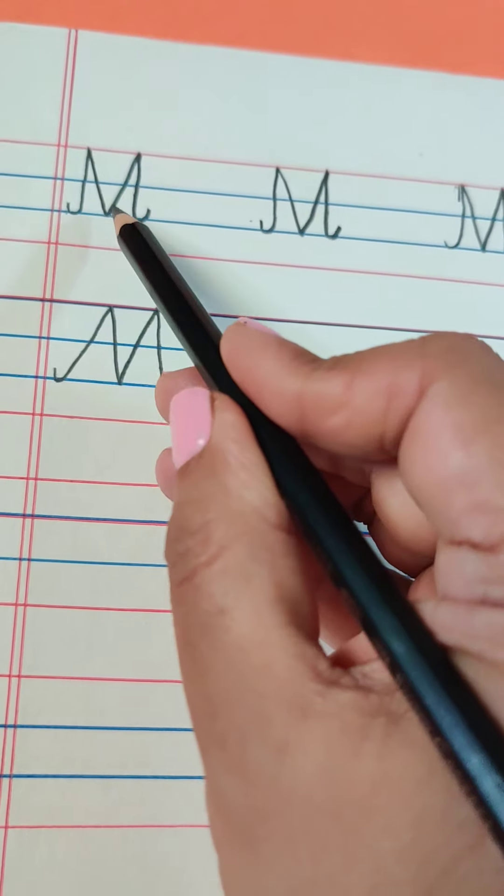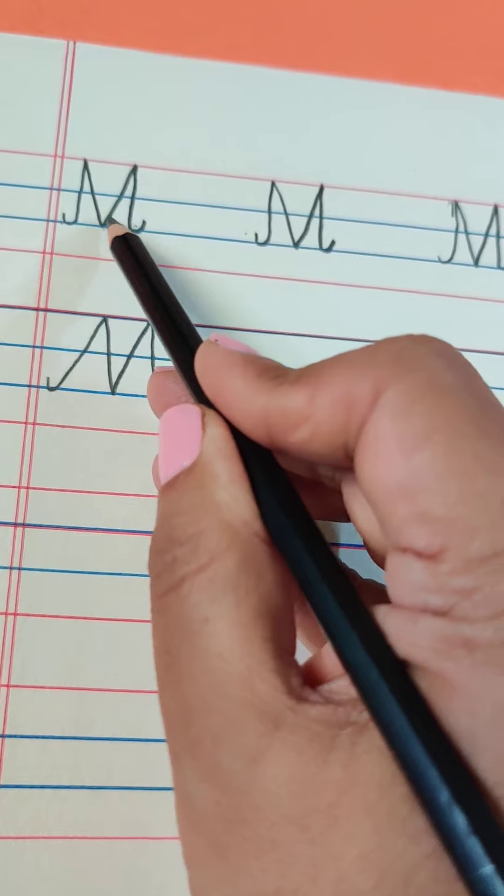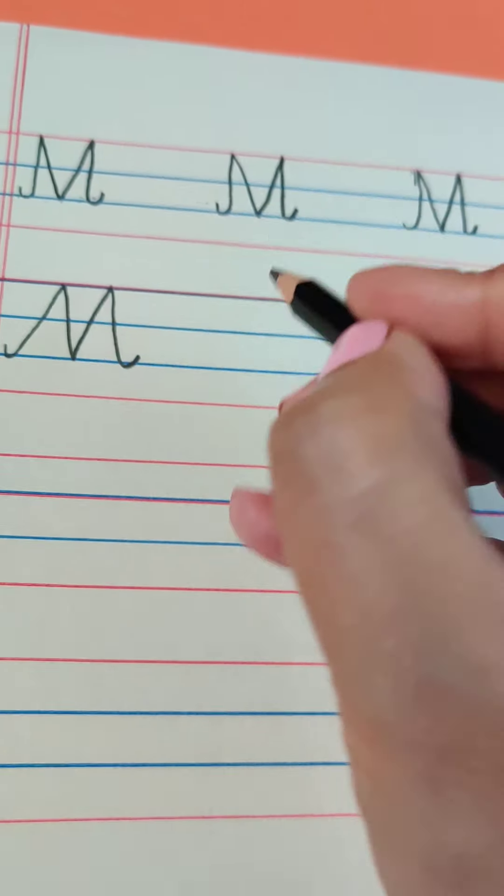Now, the second kind of mistake is, this V should fall in the center of these two lines. Okay, if it falls this side or this side, wrong. So it should fall in the center.